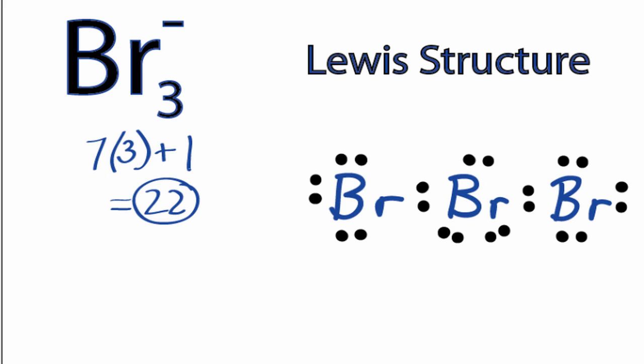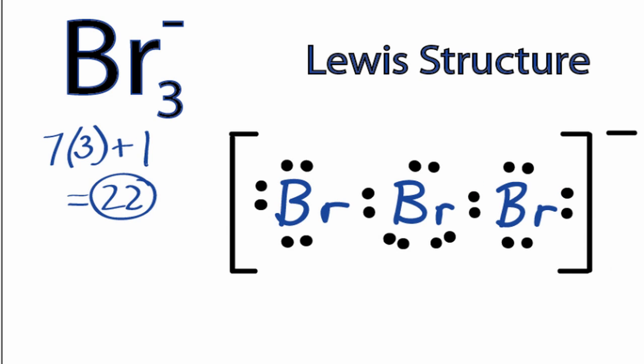The last thing we need to do for the Br3 minus Lewis structure is put brackets around it to show that we have a negative ion. And there you have it, the Lewis structure for Br3 minus. This is Dr. B, and thanks for watching.